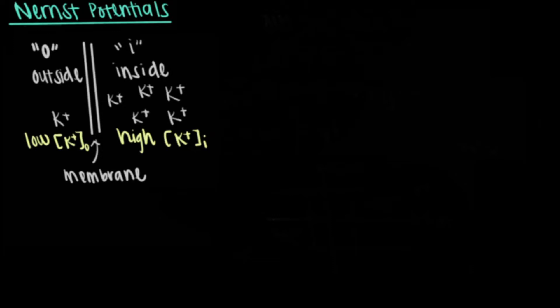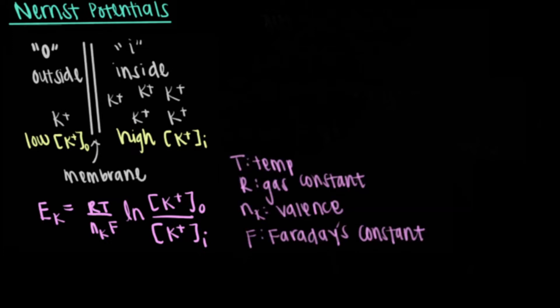The Nernst potential, represented by a capital E lowercase k, is equal to RT divided by NFK times the natural log of the ion concentration on the outside of the cell divided by the ion concentration on the inside of the cell. The subscript k represents the ion being considered, which in this case is potassium.